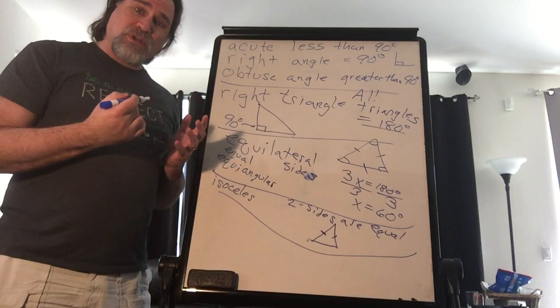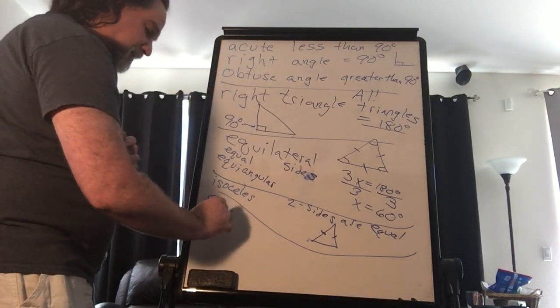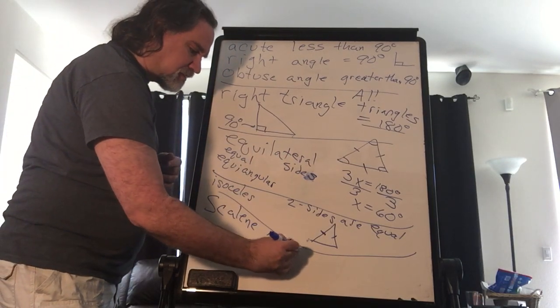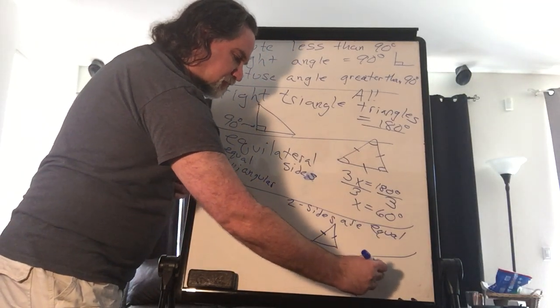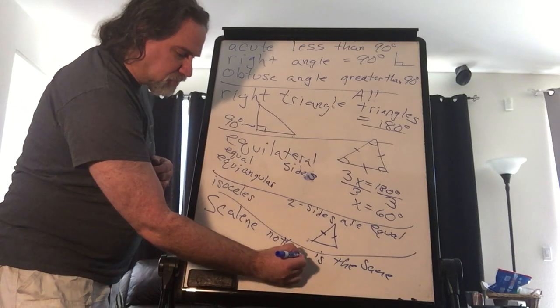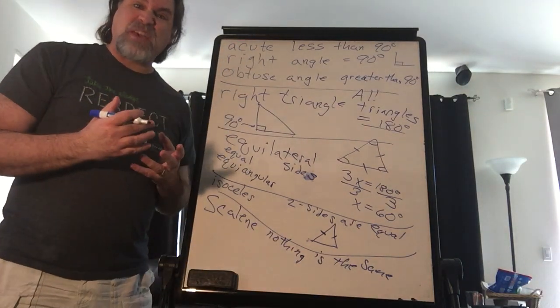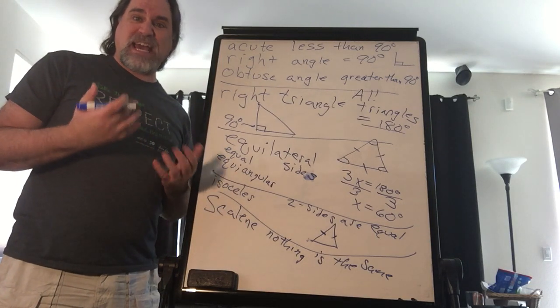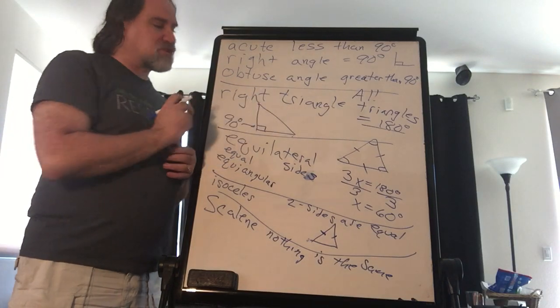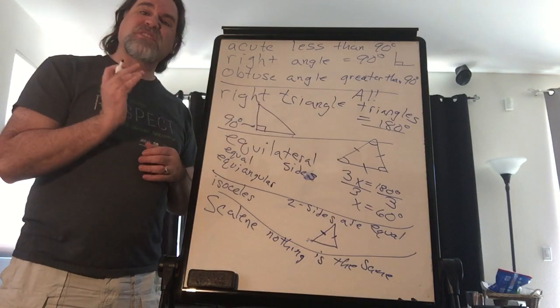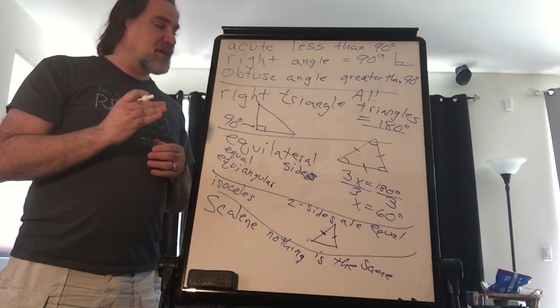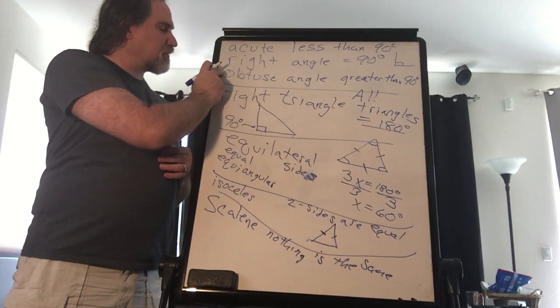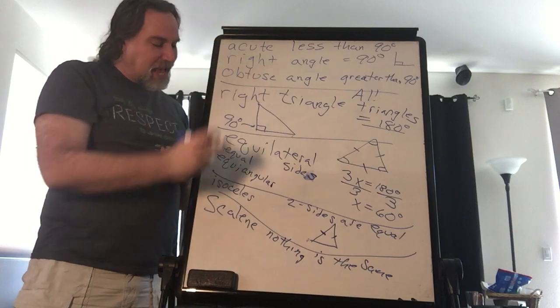And the last one we want to talk about is one called scalene. What does that mean? Nothing is the same. Scalene means all the side lengths are different. There's nothing spectacular about them. They can be scalene and could still be a right triangle because it just means the sides and the angles are all different. It also doesn't stop it from being acute or obtuse. It could be any of these and still be scalene.